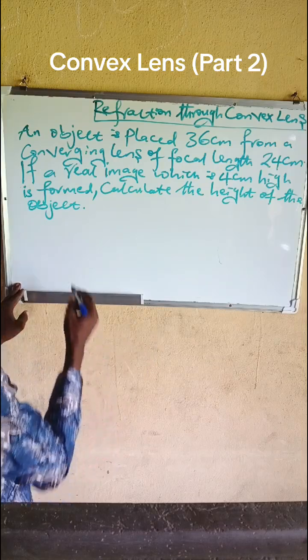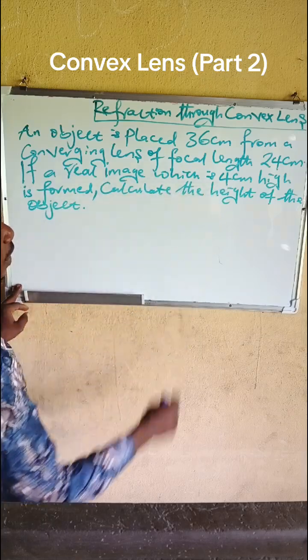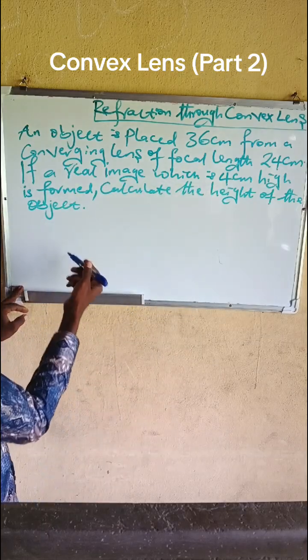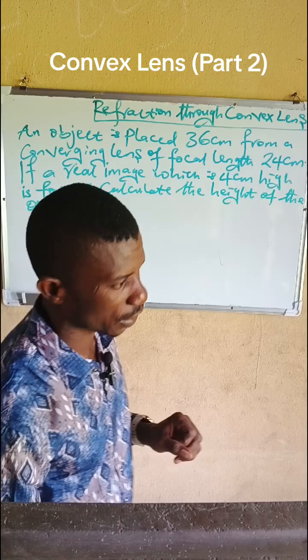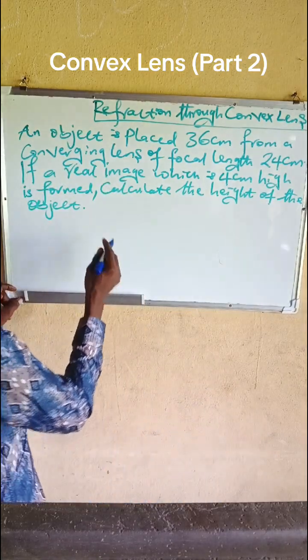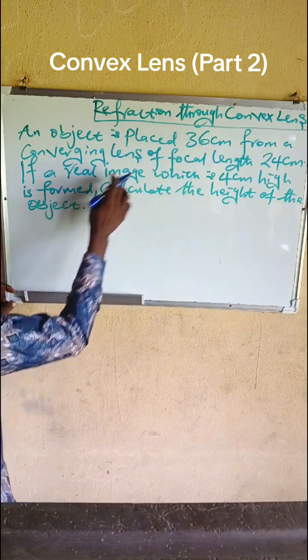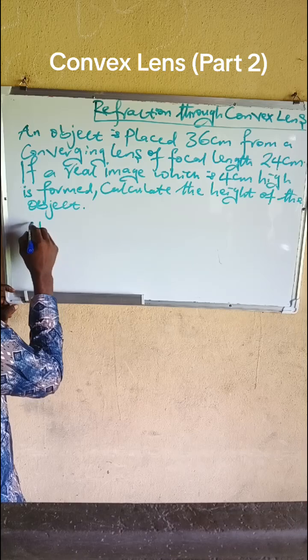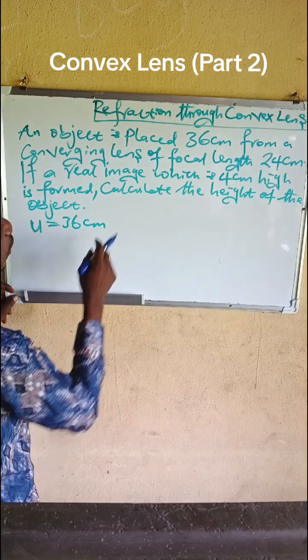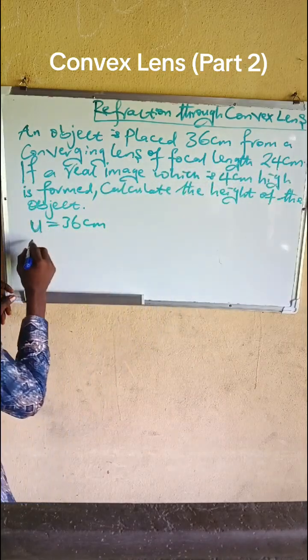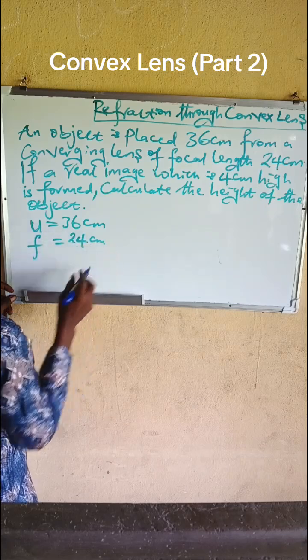If a real image which is 4cm high is formed, calculate the height of the object. Let us see the parameters that are given: an object is placed at 36cm from a converging lens, that means object distance u = 36cm, and the focal length f = 24cm.